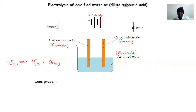These are the ions produced by our water. However, because we added some sulfuric acid to our water, we also have sulfuric acid ionizing. Our sulfuric acid will ionize completely into hydrogen ions and sulfate ions.